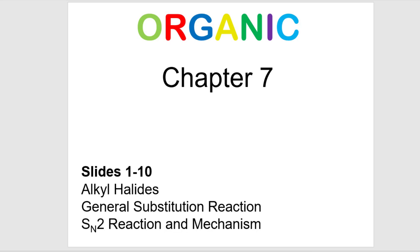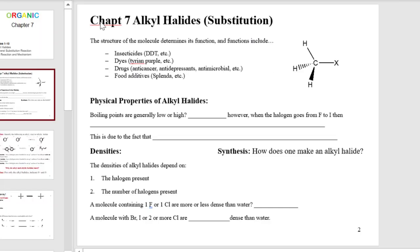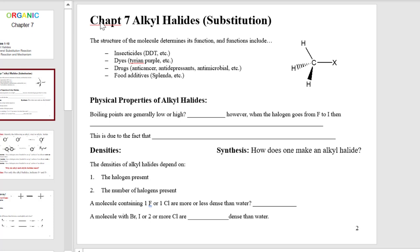Chapter seven, slides one through ten. This is going to be our first real chapter doing organic chemistry. Technically we did do the radical halogenation last chapter and we're going to build off of that. But this is going to be a reaction type — a mechanism type — that we're going to be using quite a bit from now until the end of organic two.